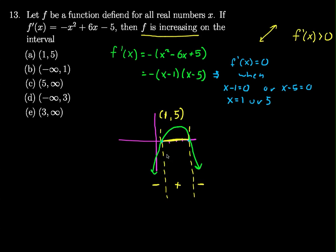So either graphically or analytically, you can see that, in this case, the interval (1, 5) is where it's positive, so it's where the graph is increasing, so my answer is A.